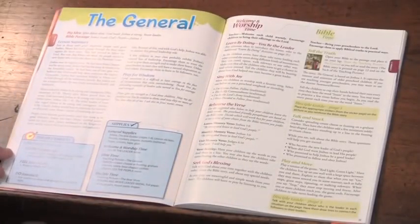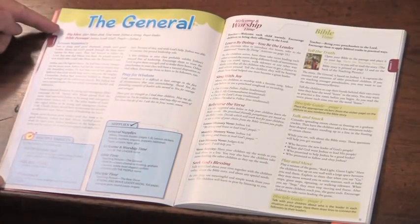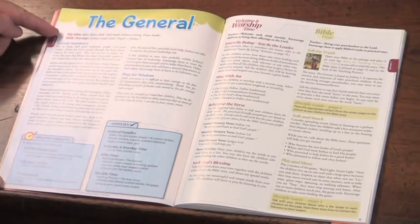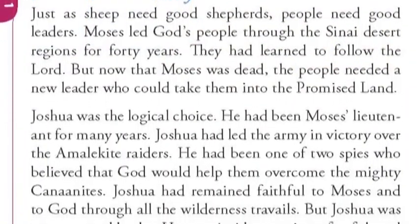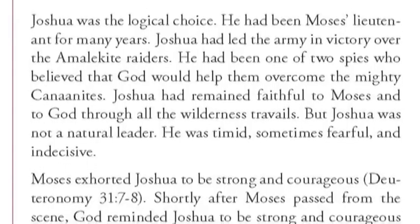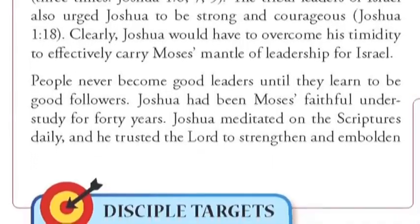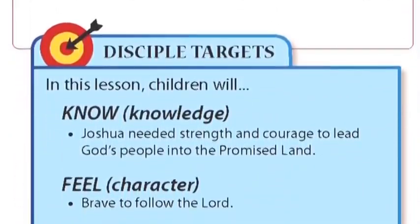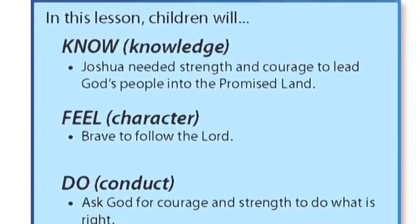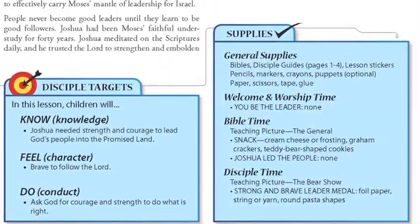We are ready to take a look at a lesson. The title of the lesson is at the top; you see the big idea and the Bible passage, which will help you stay focused on where you want to go and what you want to do. The rest of this page is for you as a teacher, giving you a lesson summary and some good Bible background information. At the bottom, by lesson, we identify the knowledge, the character, and the conduct we want to see developed. Then we tell you what supplies you need, listed by segment of the lesson.